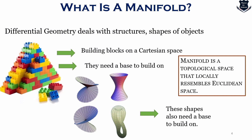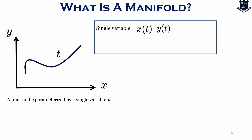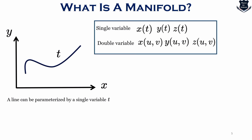In order to understand a manifold, the first thing we need to understand is that it locally resembles Euclidean space. If I take a curve through a 3D Euclidean space, a line can be parameterized by a single variable — x(t), y(t) and z(t). Similarly, a surface can be parameterized by two variables: x(u,v), y(u,v) and z(u,v). These objects are considered to be locally similar to one-dimensional or two-dimensional Euclidean space, R and R², respectively.